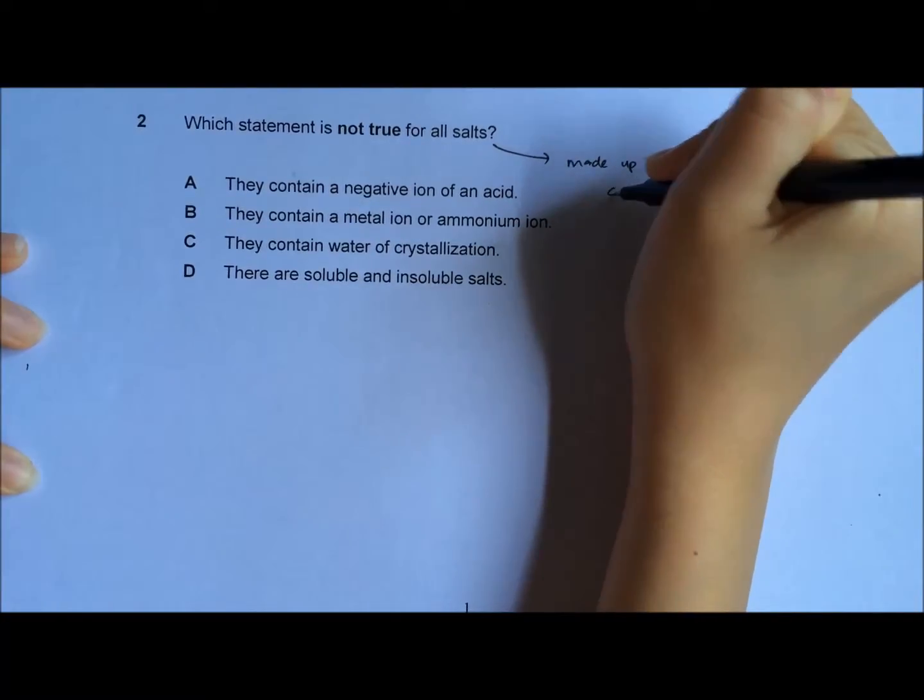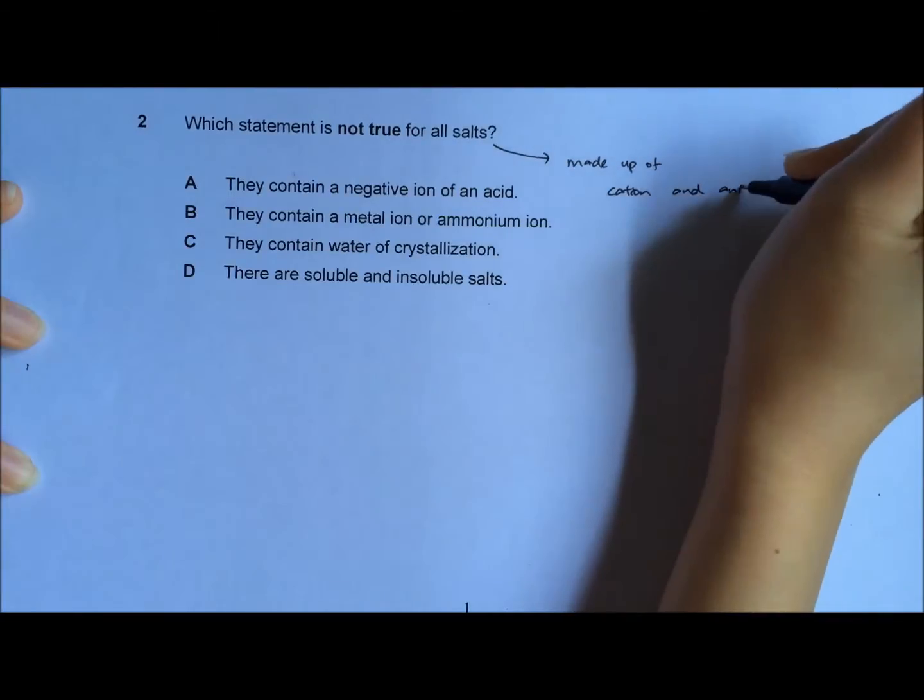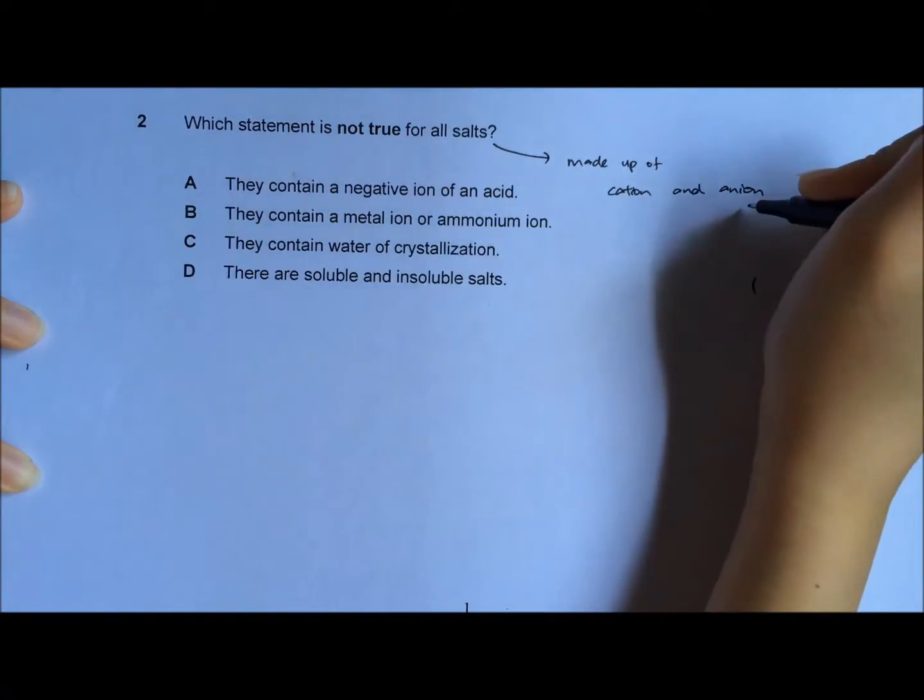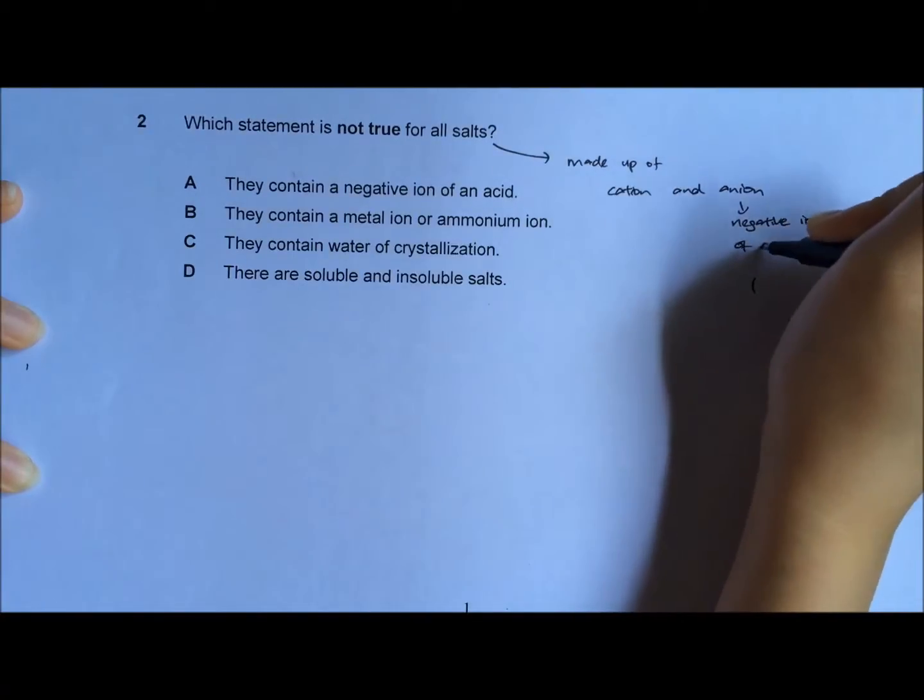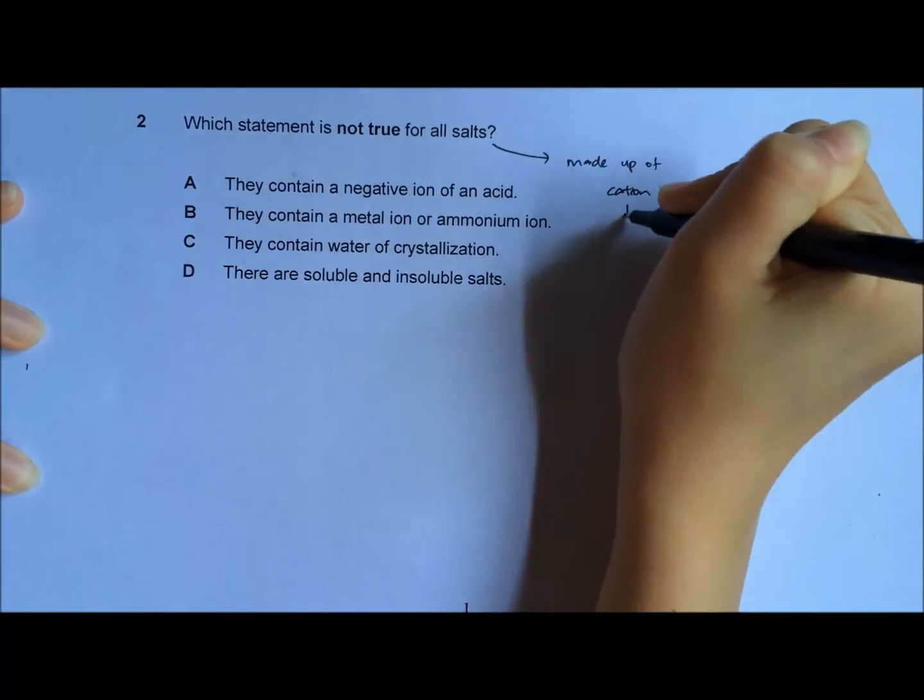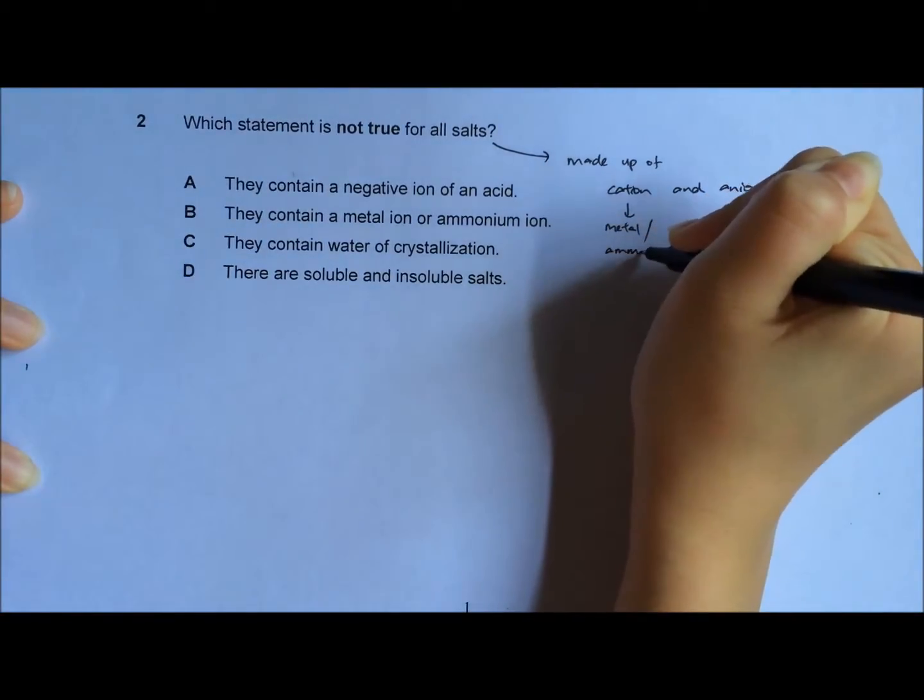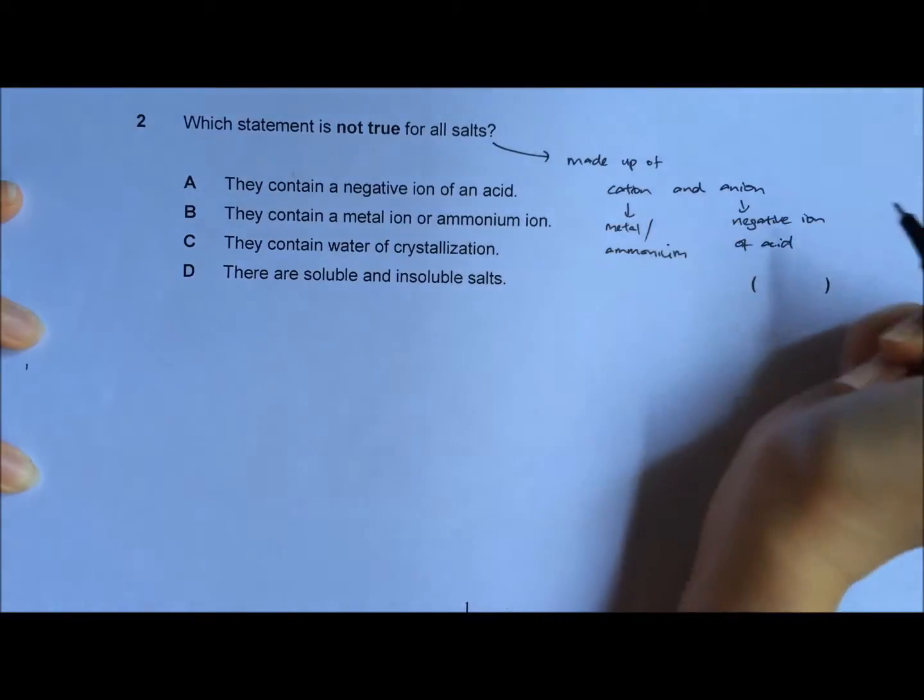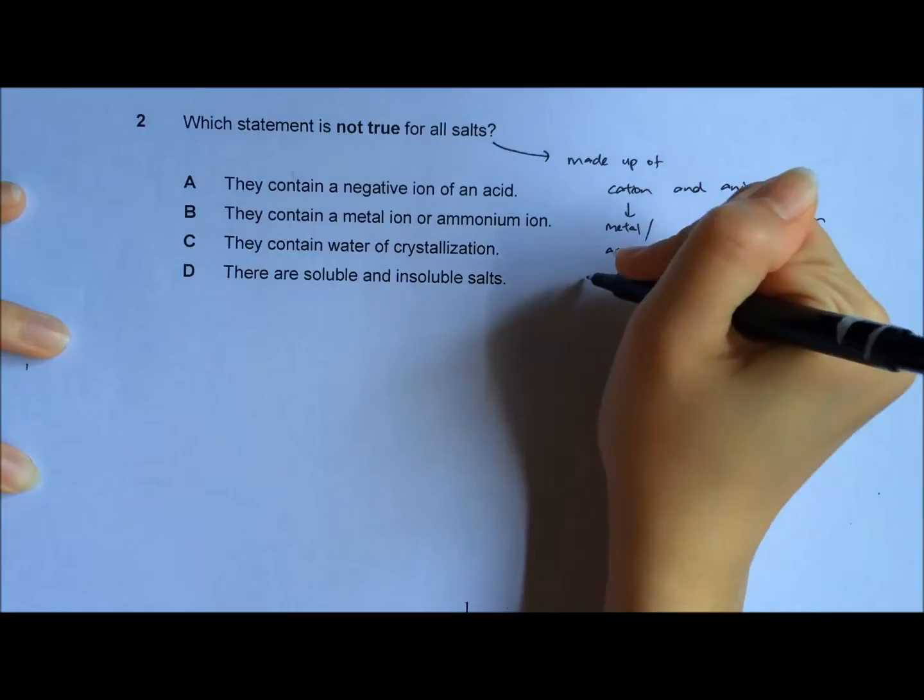Salt is made up of cations and anions. Anion means they are negative ions, mostly from non-metal and it comes from an acid. Cation is either the metal ions or ammonium ion. So based on the definition of the salt,